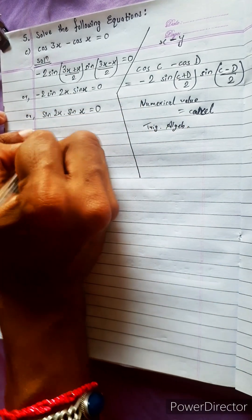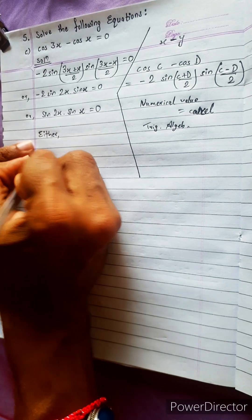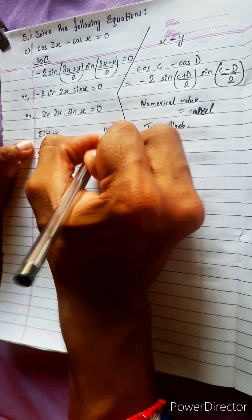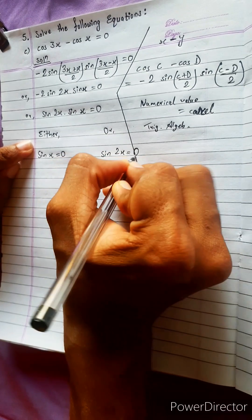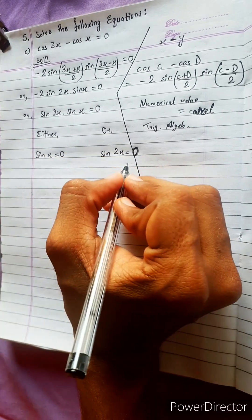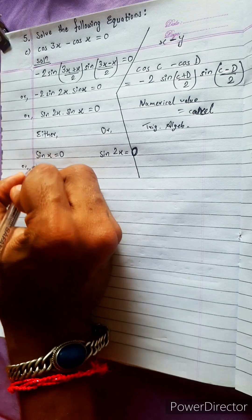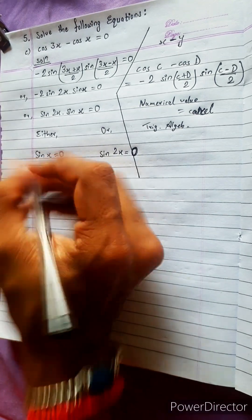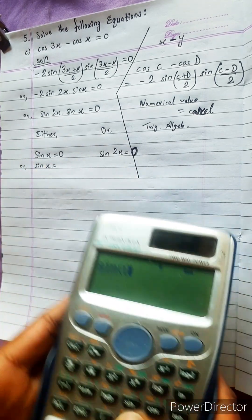So let's write sin 2x times sin x equals 0. Then either one must be 0. We have no other option. Either sin x equals 0, or sin 2x equals 0. One must be 0. Here we can write, in place of 0, we can write sin 0.